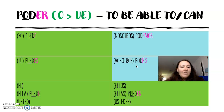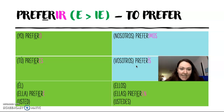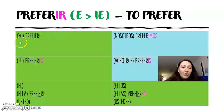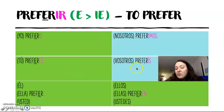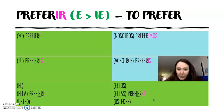Let's look at another verb: preferir. I selected this one because it's one of those where it's the second vowel in the stem that changes, not the first. This is an e to ie verb and it means 'to prefer': yo prefiero, tú prefieres, él/ella o usted prefiere, nosotros preferimos, vosotros preferís, y ellos, ellas y ustedes prefieren. You can see that the boot dynamic works for this verb as well — it works for all of the verbs that were in the columns I showed you earlier.